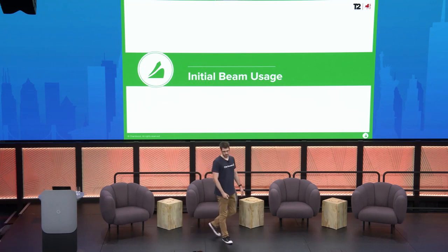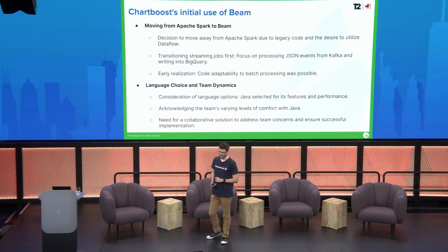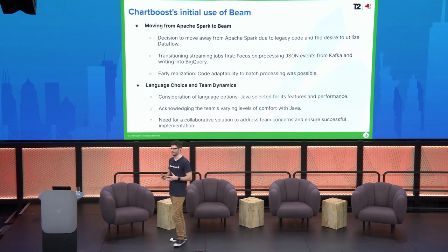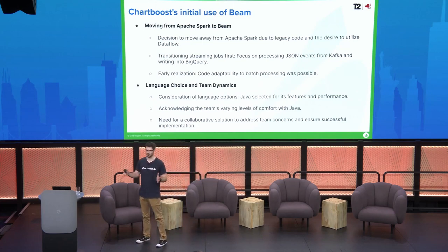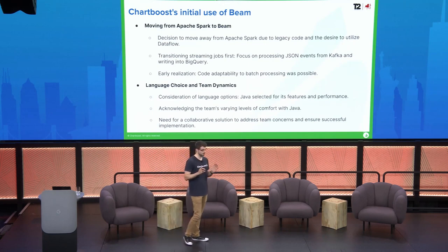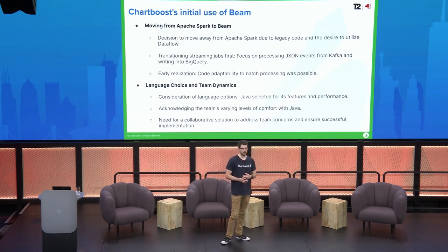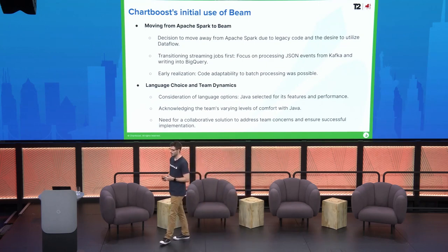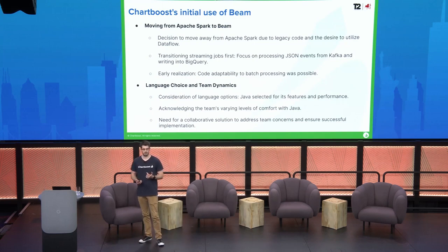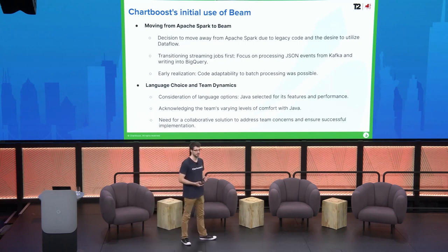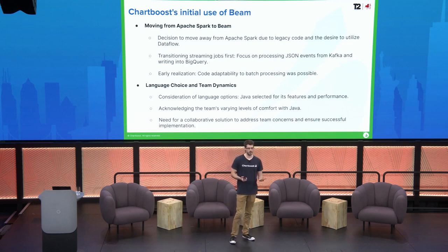Let me guide you through the whole story about how we started using Apache Beam. We first started using Apache Spark. We had a pretty massive Spark monolith job with a lot of business logic inside — it was very difficult to change and to tune, pretty much a nightmare. Three and a half years ago we had the opportunity to move from AWS to GCP, and as a result we found Apache Beam as a good technology to replace what we had.